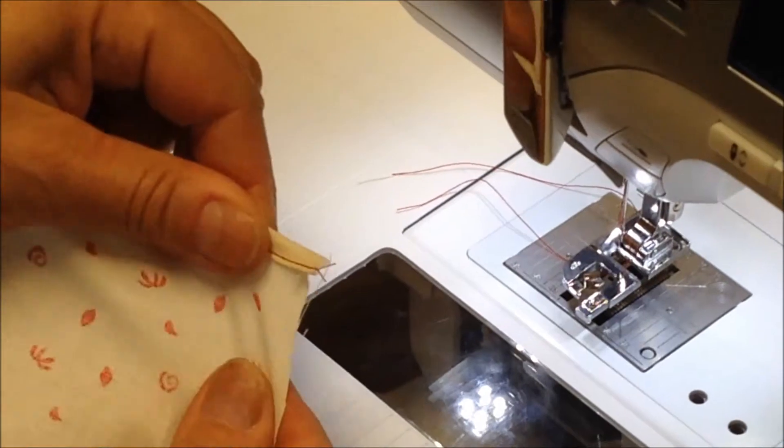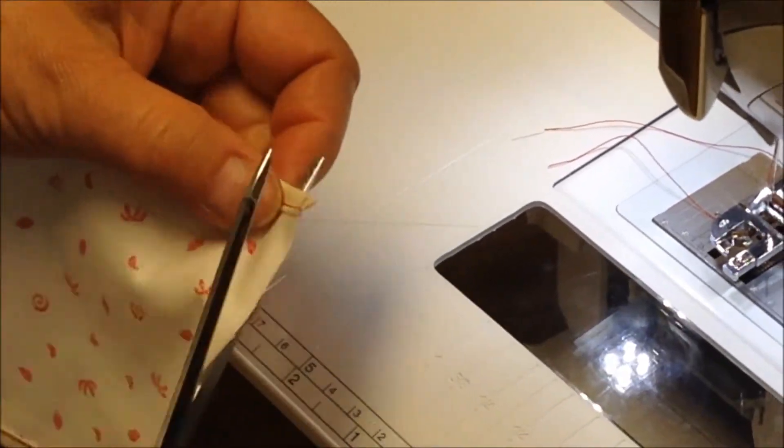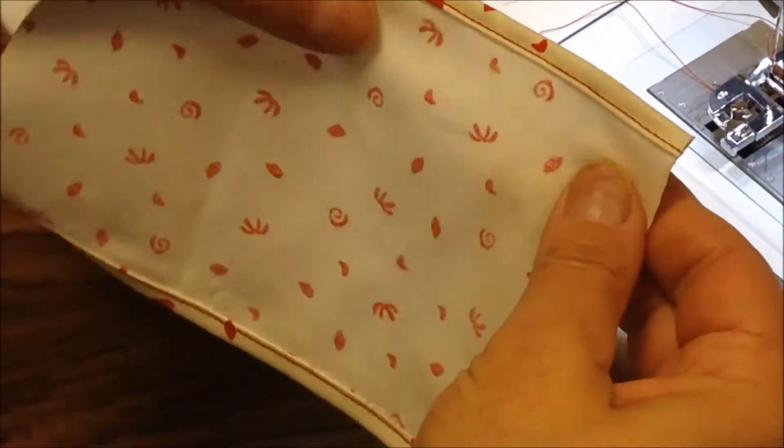Cut your thread tails. And then also notice that you may have some extra fabric there, so trim that off. You do want a 90 degree corner, like so.